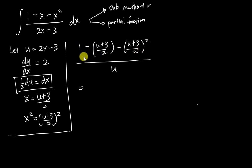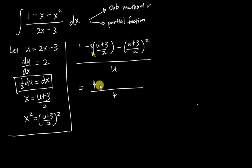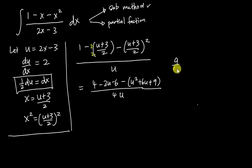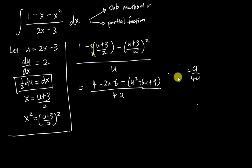The denominator terms are over 4 and over 2, so I make everything over 4. The first term becomes 4/4, so I multiply through by 2 to get -2u - 6. Expanding the squared term gives u² + 6u + 9. Writing everything over 4u, I now have (4 - 2u - 6 - u² - 6u - 9) divided by 4u.